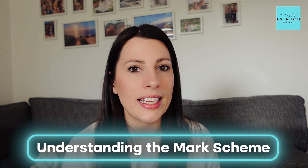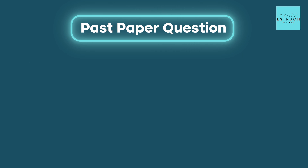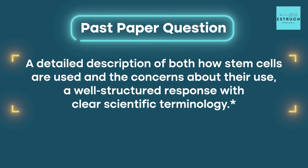Let's go through understanding the mark scheme in more detail so that you are able to get these top marks. Take a look at this past paper question: 'Discuss the potential uses of human embryonic stem cells, outlining concerns that arise when using them for research.' Six marks. The mark scheme shows that in order to get into level three — five to six marks — you would need a detailed description of both how stem cells are used and the concerns about their use, plus a well structured response with clear scientific terminology.